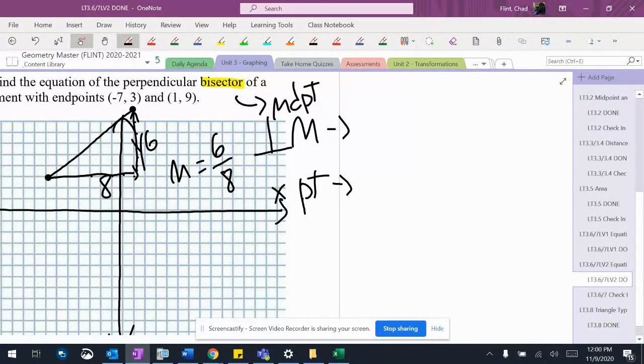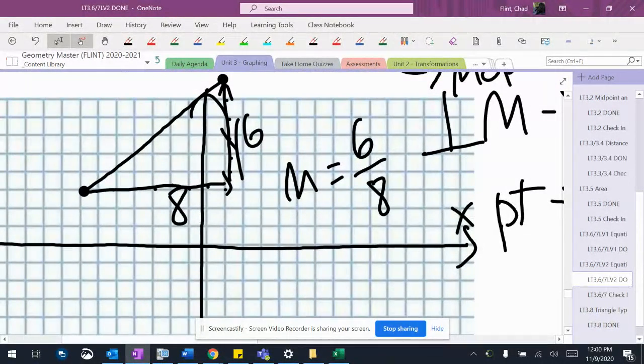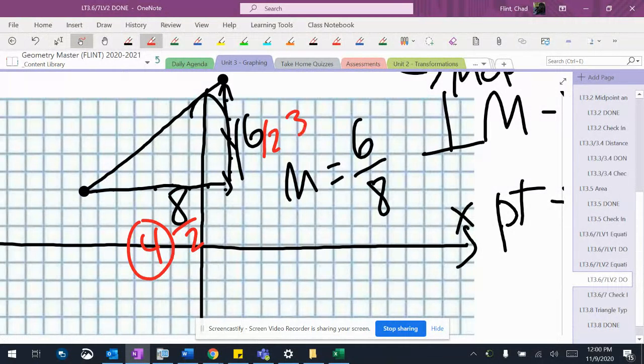I'm supposed to have the perpendicular bisector, which means I'm going to do the third thing, flip the fraction and change the sign. To get the middle, I'll go back to my picture and I'll divide both of these in half.